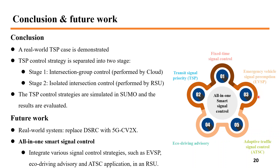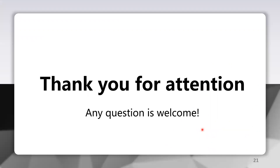In conclusion, the real-world TSP case is demonstrated and we propose a two-stage TSP control strategy performed by OBU and RSU respectively. These TSP control strategies are simulated in SUMO and the results are evaluated. For future work, the communication module DSRC can be replaced with C-V2X as technology advances. Our team's goal is to integrate various signal control strategies — such as emergency vehicle signal preemption, eco-driving advisory, and adaptive traffic signal control — into a single RSU application, proposing an all-in-one smart signal control system for a smart city. Thank you for your attention, and questions are welcome.